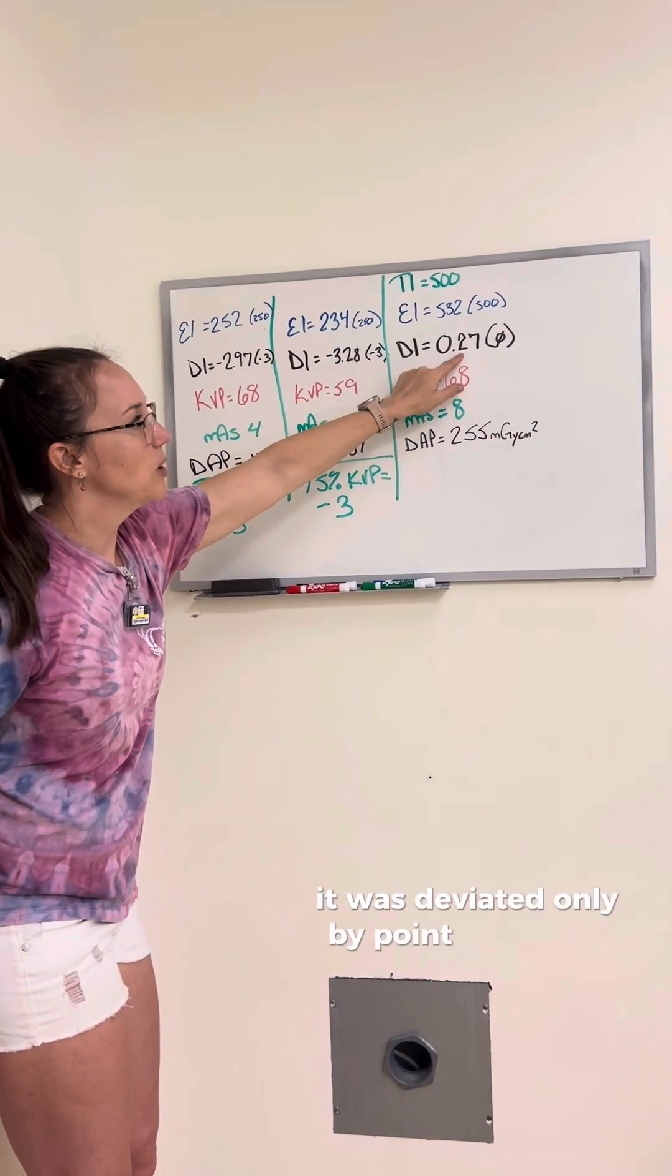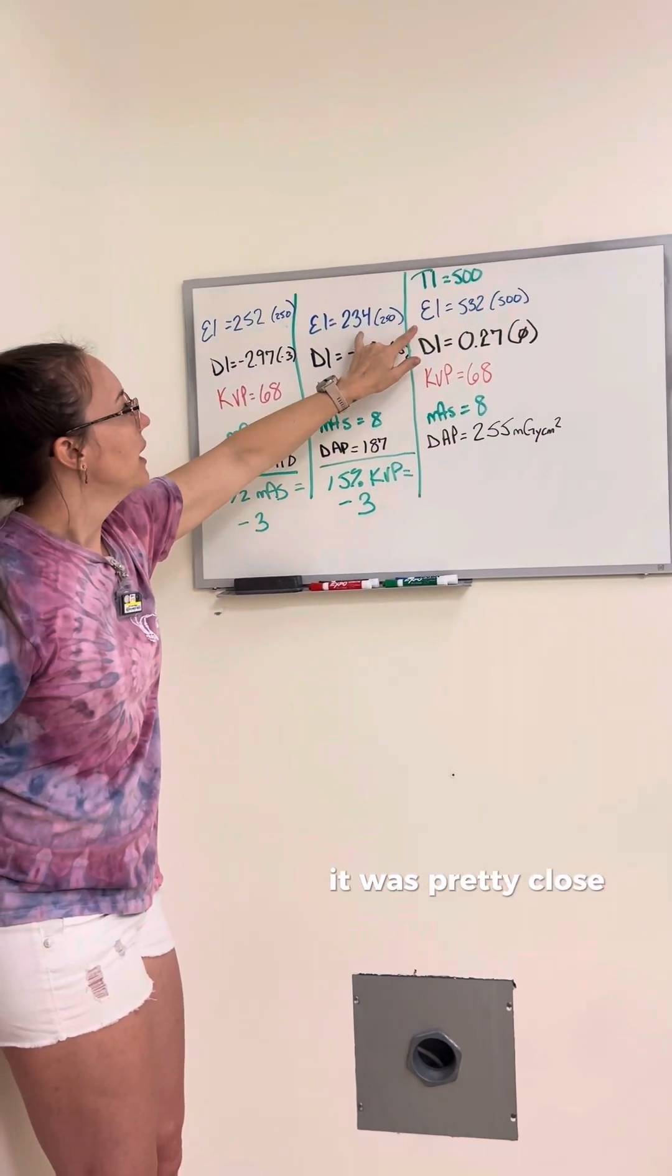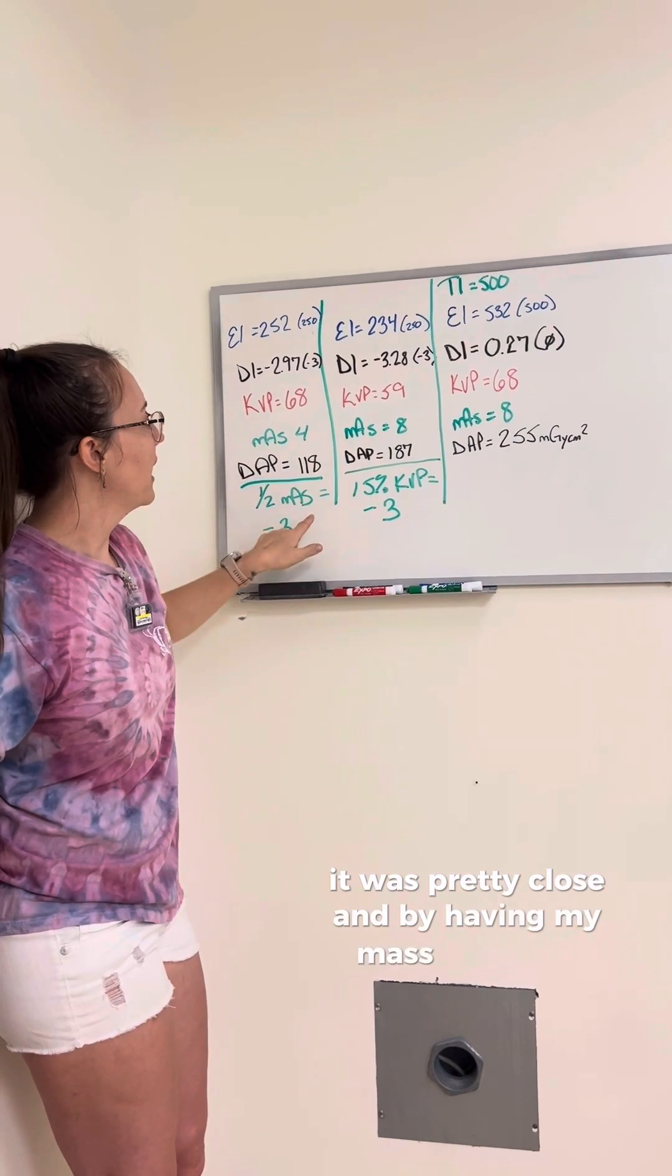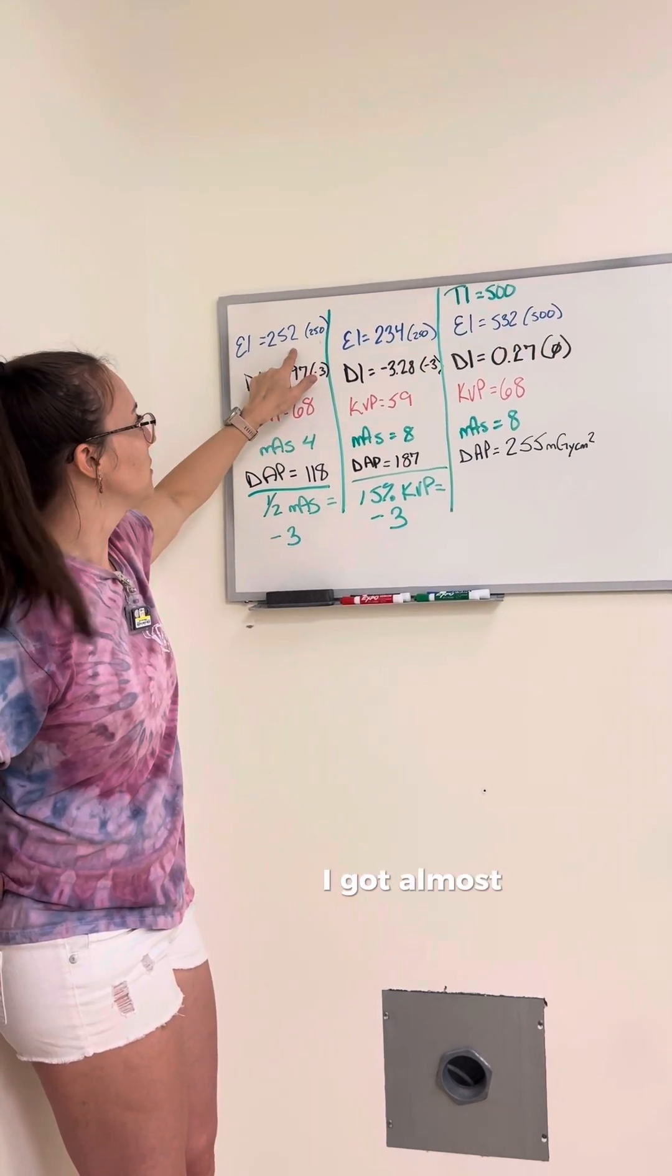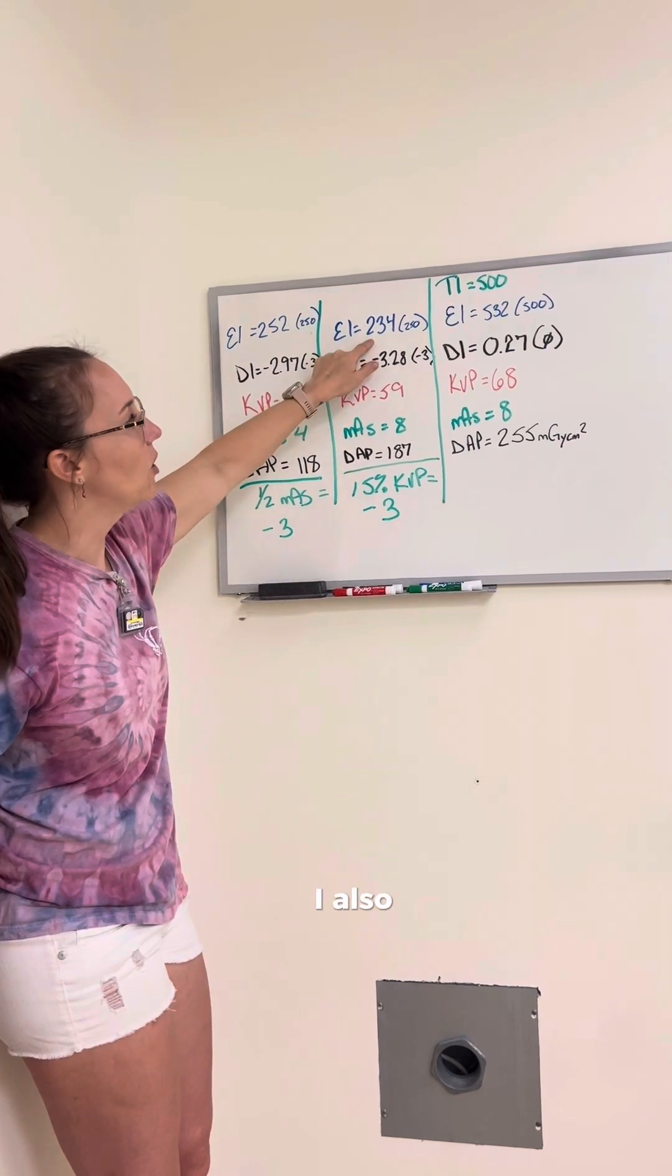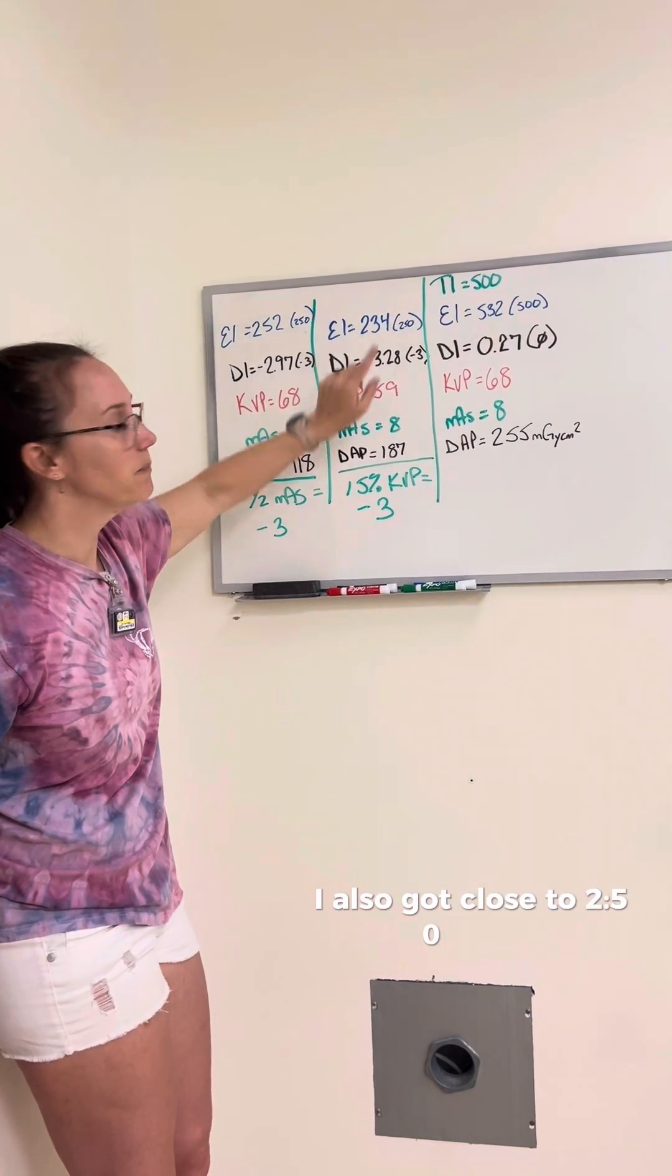It was deviated only by 0.27, it was pretty close. And by halving my mass last week, I got almost a 250, and by bringing my KVP down 15%, I also got close to a 250.